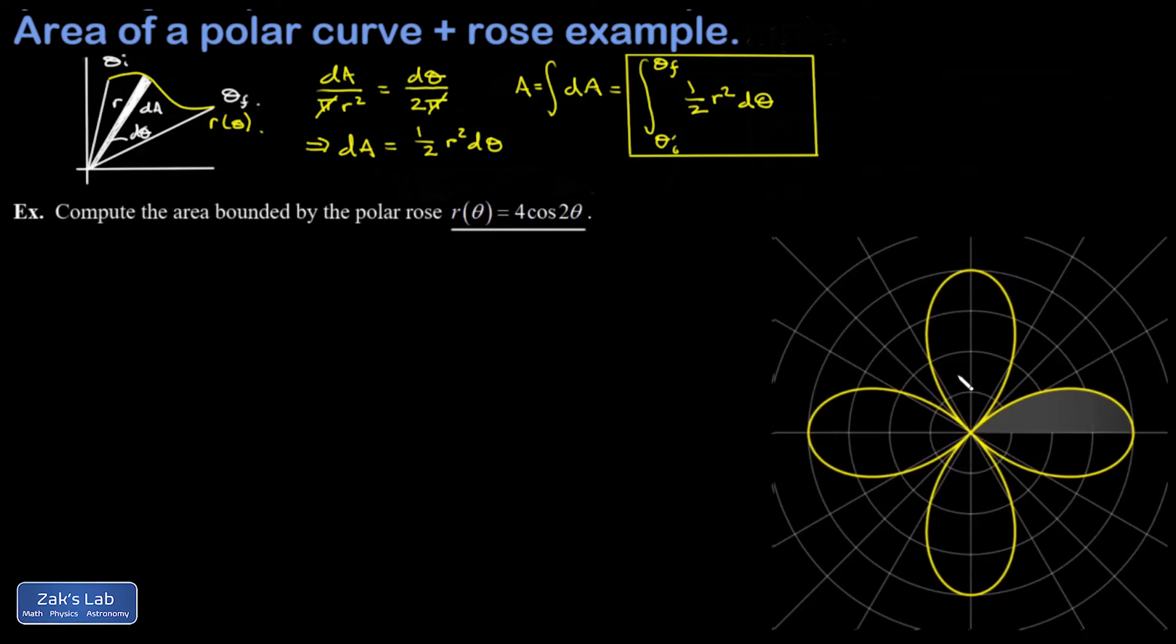First, if I plug in θ = 0, I get r(0) = 4cos(0) = 4. So at an angle of zero I get r = 4, and that's the tip of the petal. Then I want to integrate until the petal ends at the origin. So what I'm looking for is the next angle where r equals zero. The first time the cosine function vanishes is when its argument equals π/2, so I get 2θ = π/2. This means θ = π/4 when this petal terminates. So to get one half of one petal we're going to integrate from zero to π/4.